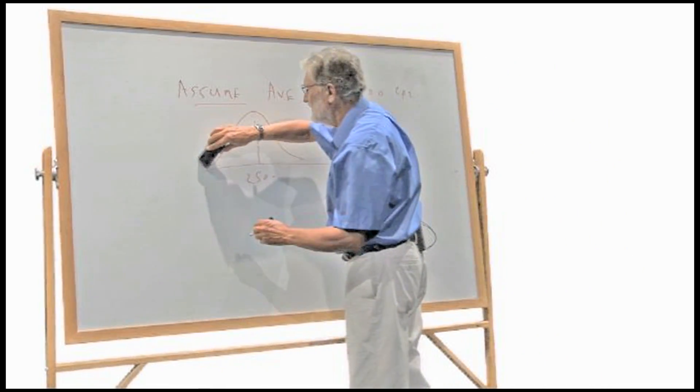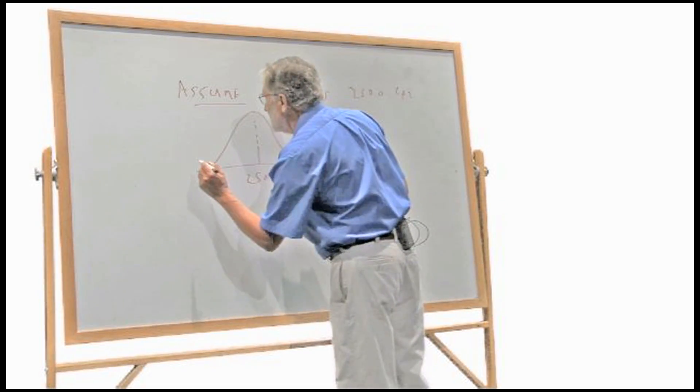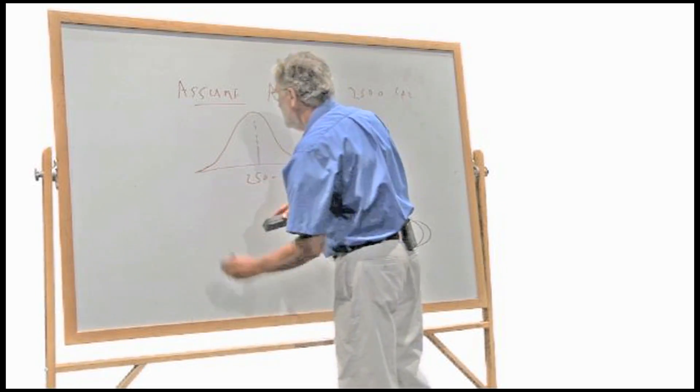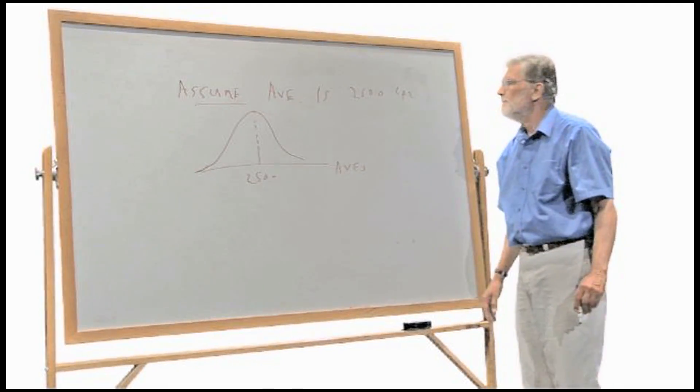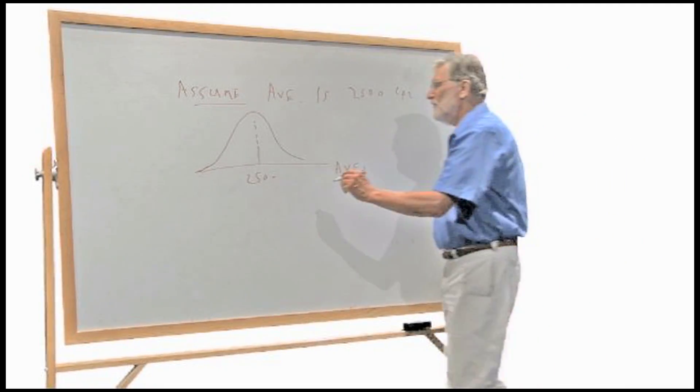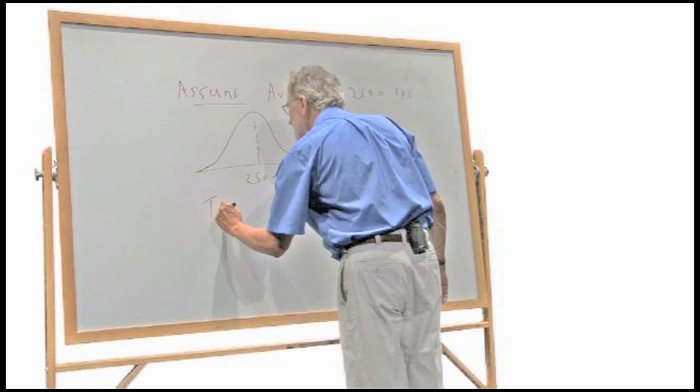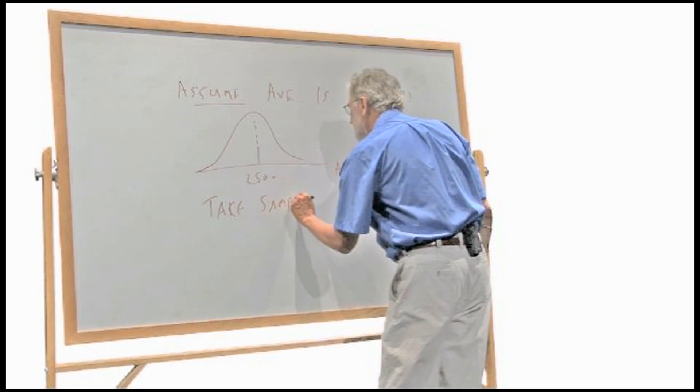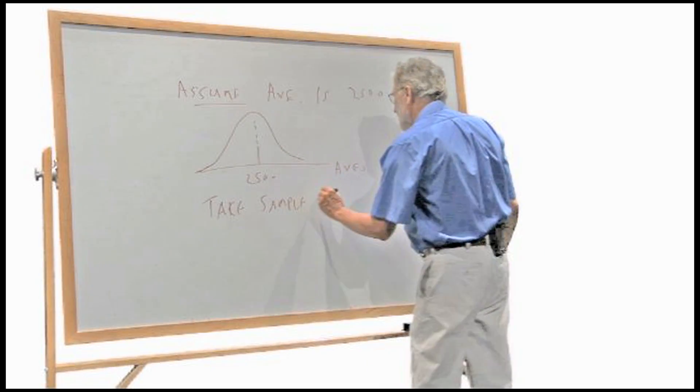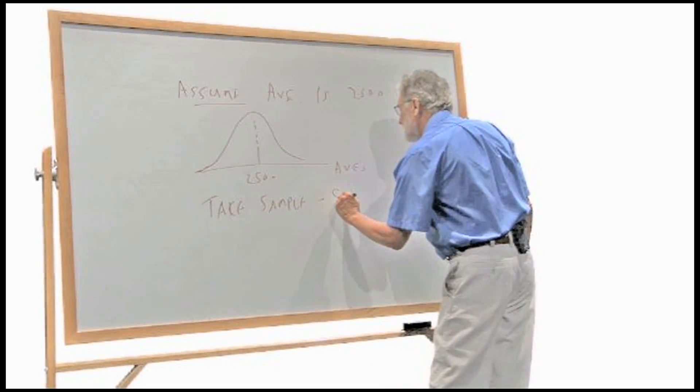It's not supposed to have the Salvador Dali mustache over here, it's supposed to keep, I can't seem to draw that. But it comes down toward the axis and never touches it. So now let's say we take one sample. Take a sample. I don't know, maybe we sample 80 people or something.